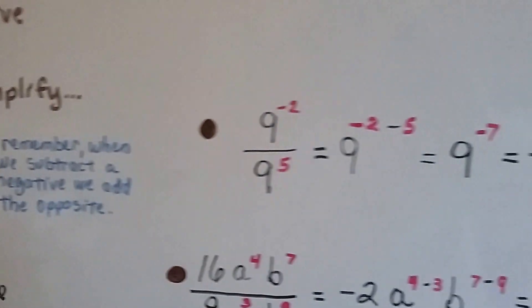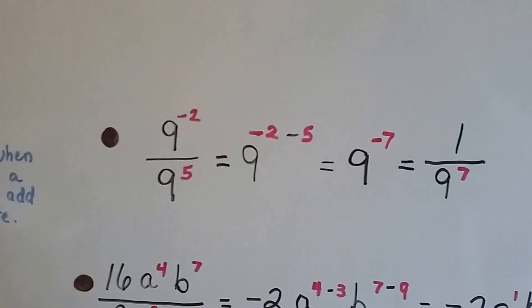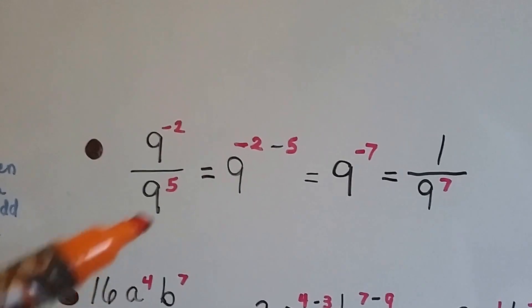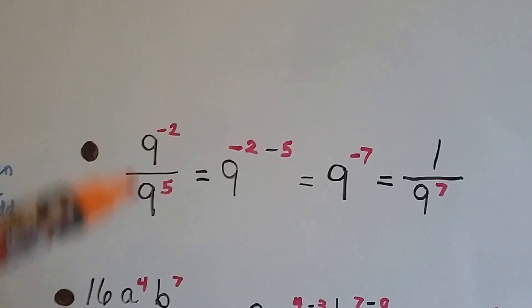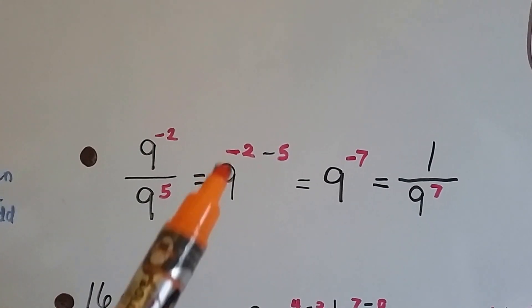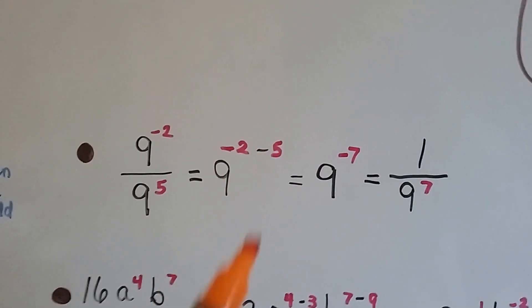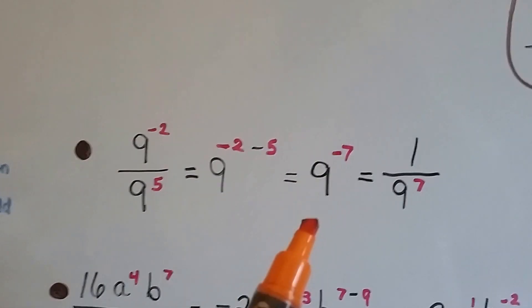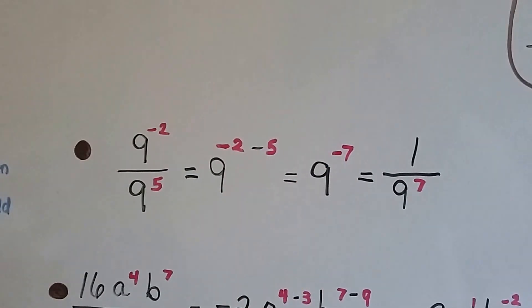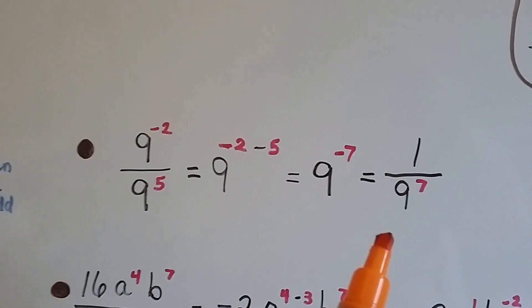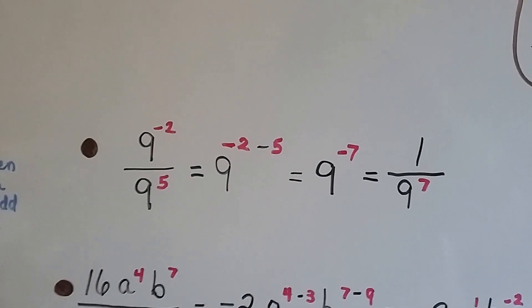For nine to the negative second over nine to the fifth, we subtract: negative two minus five gives us negative seven. Because we have a negative exponent, that's a fraction — one over nine to the seventh.